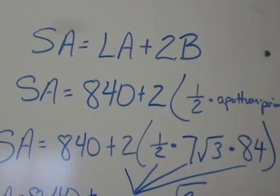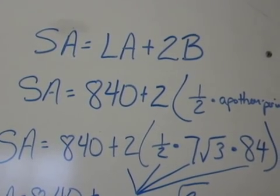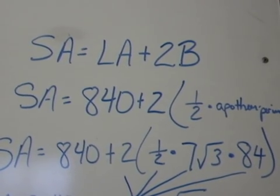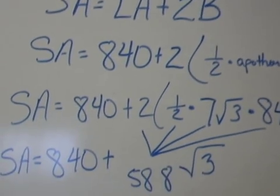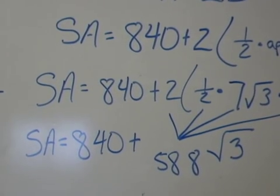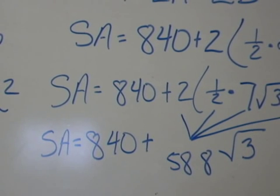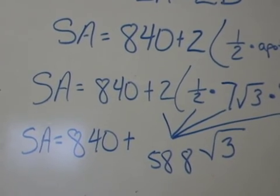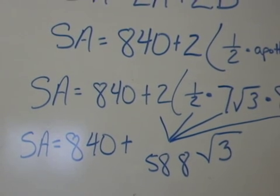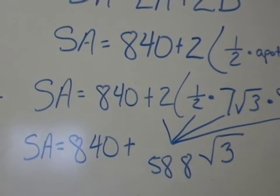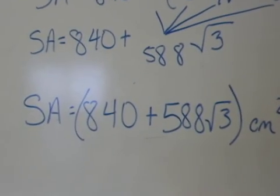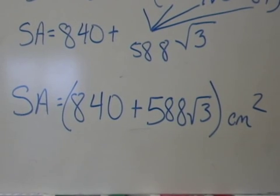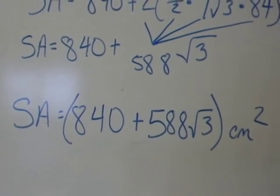We're working with exact answers right now, not rounding. So we're going to multiply the 2 by the half by 7 by 84, and bring the radical 3 down as if it were a variable. So right now, surface area is equal to 840 plus 588 radical 3. Are those things like terms? Can you actually add them together? No, you cannot. So we're going to put them inside of parentheses and give them the label of centimeters squared, and you have now found your surface area.